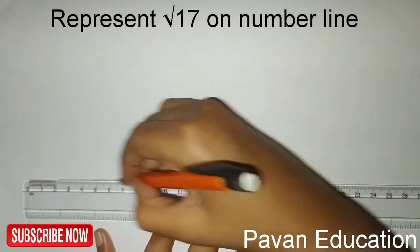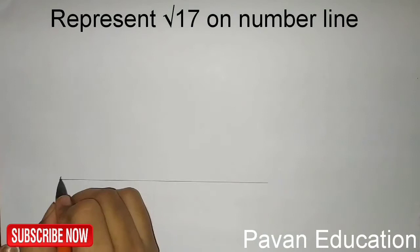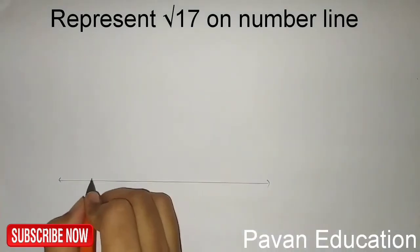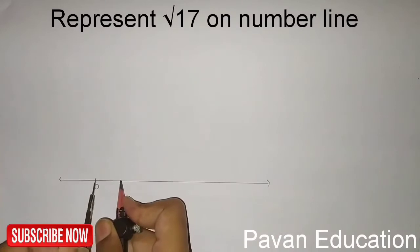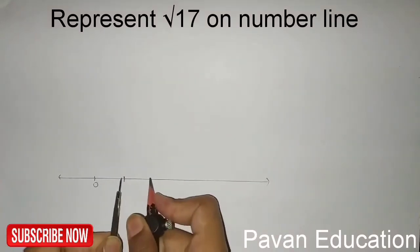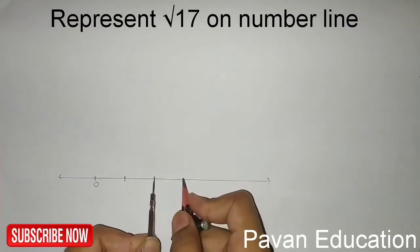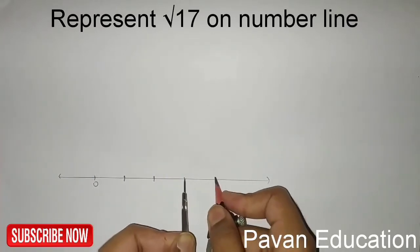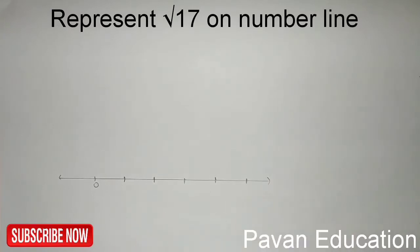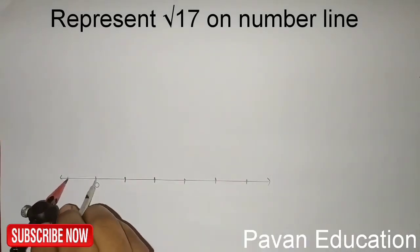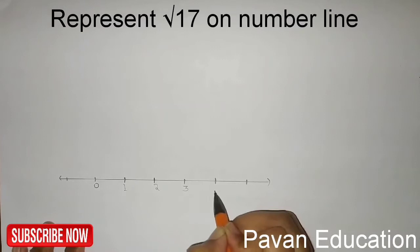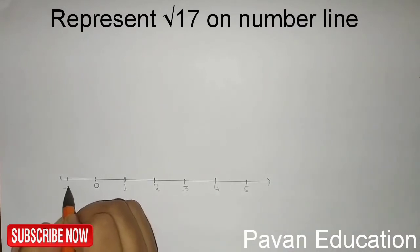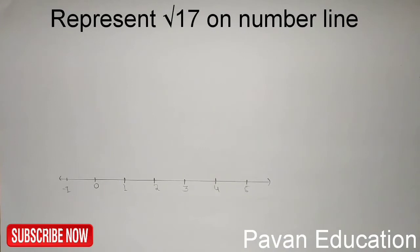Here is the number line — mark the arrows and mark this point as zero. Take a compass because the distance between numbers on the number line must be equal. I've taken 1 unit length, so it is 1, 2, 3, 4, 5, and on the left side of 0 is minus 1. So now we have 1, 2, 3, 4, 5 and minus 1 marked.